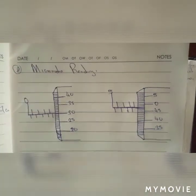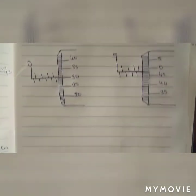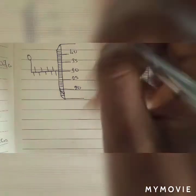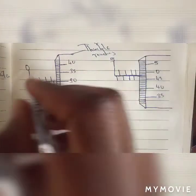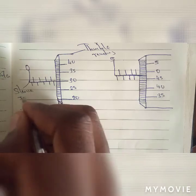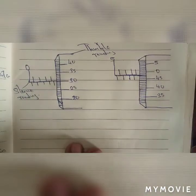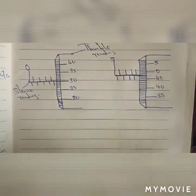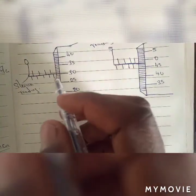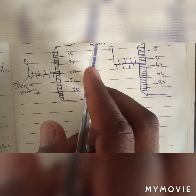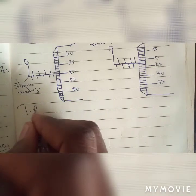I have written the questions so it will be easy for us to run through. Okay, here we go. Remember I told you earlier: here is your thimble reading, and this here is the sleeve reading. I told you earlier — just understand this step — here you divide by 100. But for the total you will not divide again; they are all in millimeters, so that's it.